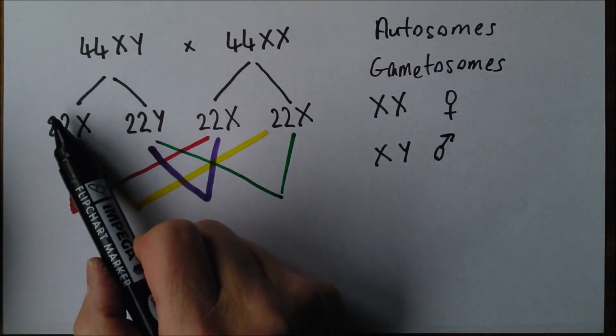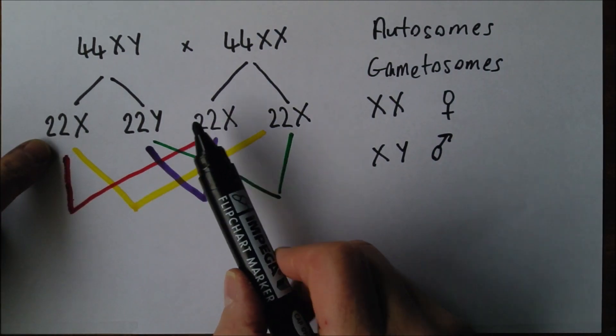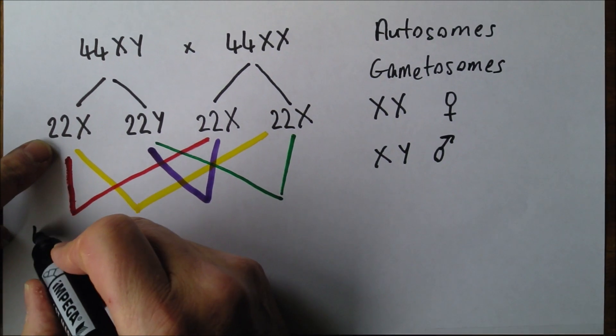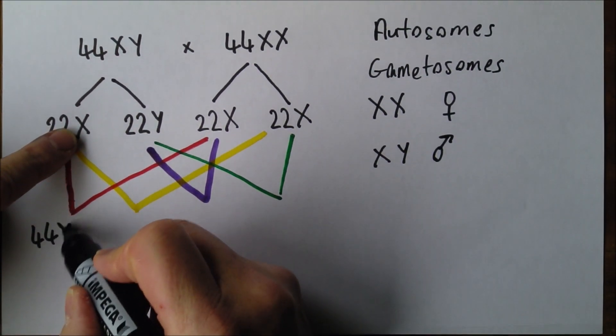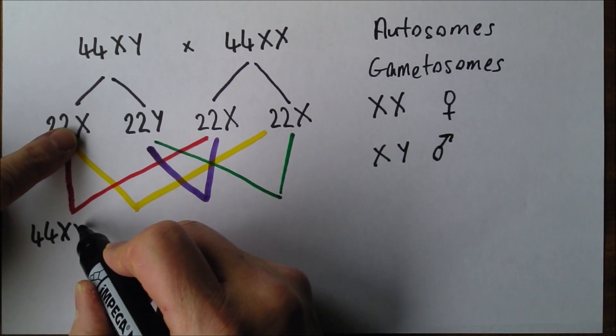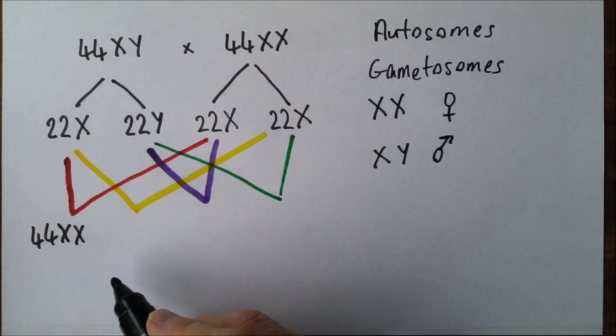Let's work out what happens if it's this one. So we've got 22 plus 22 gives us 44 again. And there we get an X from that sperm and we get an X from that ovum. So there we have 44 XX, which of course is a female.